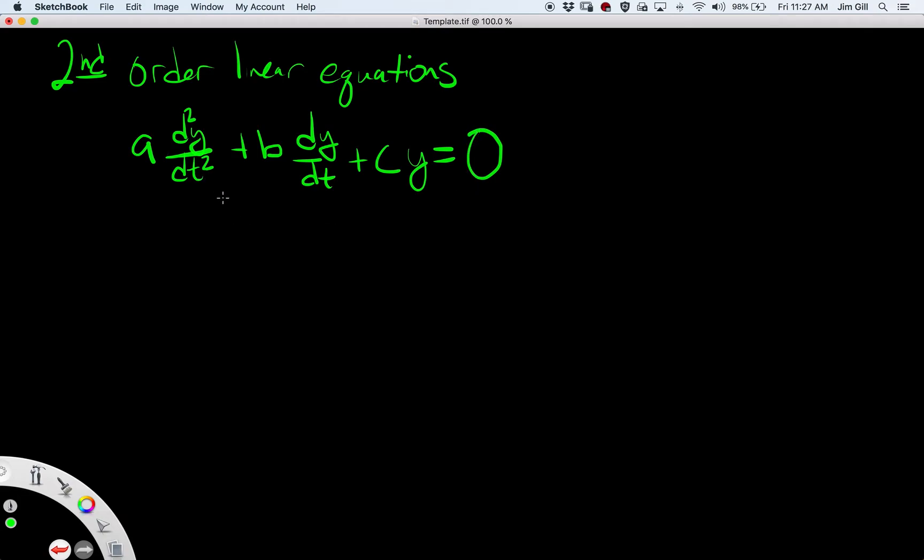A typical thing here would be a mass spring combination would have a second order linear equation with constant coefficients like this, and a, b, and c here are constants that are given. And the initial conditions for these will usually be something of the sort of y at time zero is equal to something, and then y prime at time zero is equal to something else. We have initial position and initial speed, so those are two initial conditions.